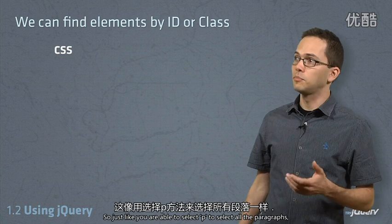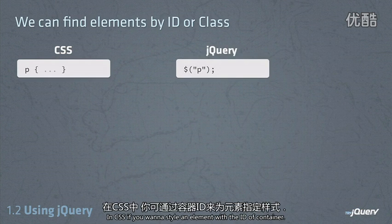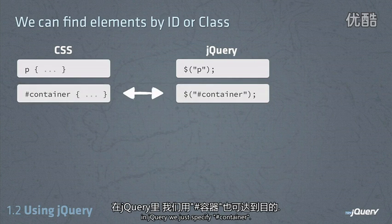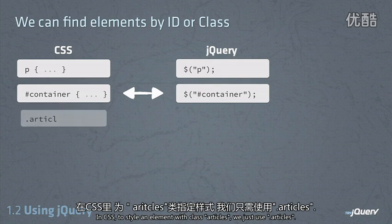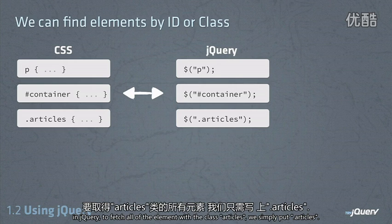Just like we were able to select p to select all of the paragraphs, in CSS, if we wanted to style an element with the ID of container, in jQuery, we just specify pound container. In CSS, to style an element with the class of articles, we just use dot articles. And in the same way, in jQuery, to fetch all of the elements with the class of articles, we simply put dot articles.